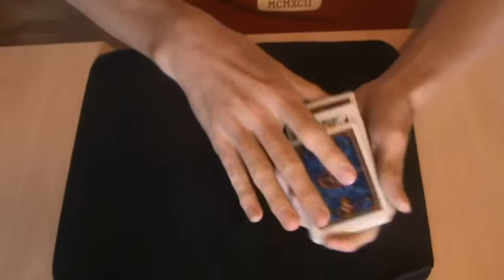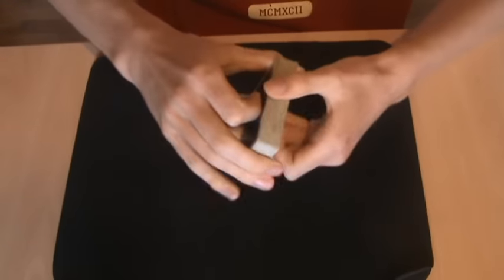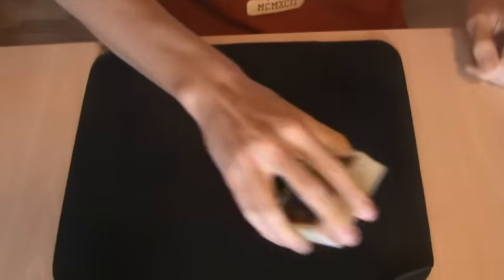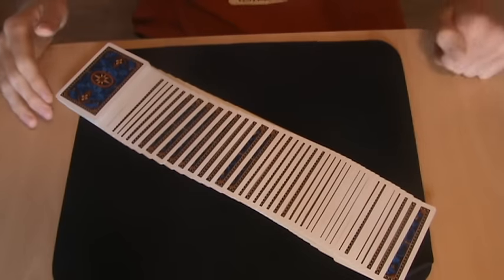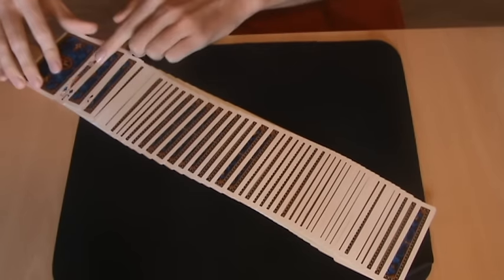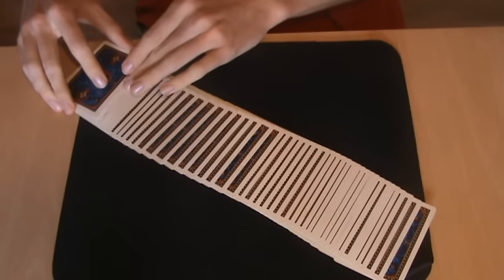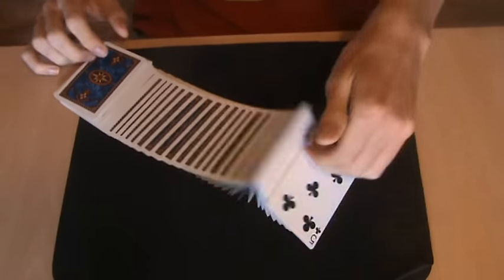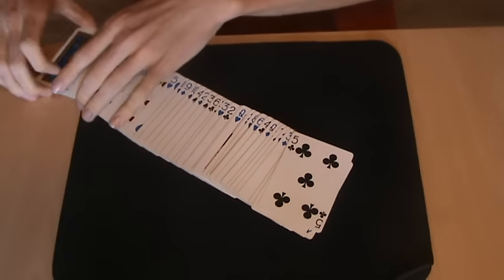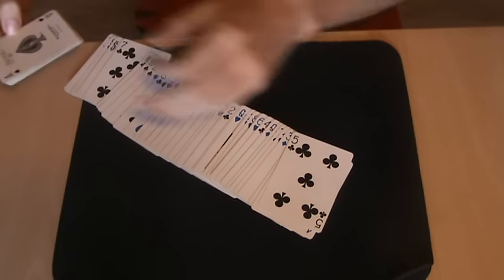That's your setup on top and you can start the trick. First thing you want to do is spread the deck to show that there is nothing strange. Make sure you don't show these top cards. And you can flip them through to show that they are shuffled because they really are. But make sure you don't show this portion.